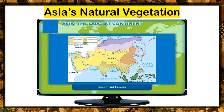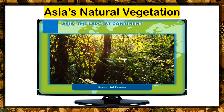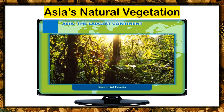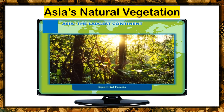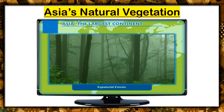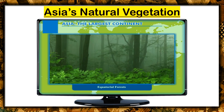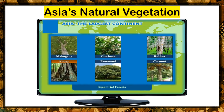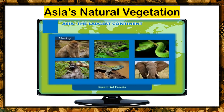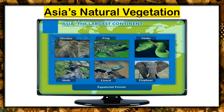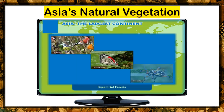Equatorial forests. Tall evergreen trees found in dense forests are the characteristic feature of the equatorial forests. These forests have a dense overgrowth of shrubs and creepers. Mahogany, ebony, rosewood, cinchona, rubber, and coconut are common in this region. Monkeys, sloths, lizards, frogs, snakes, elephants, a variety of birds, butterflies, and insects are found in these forests.